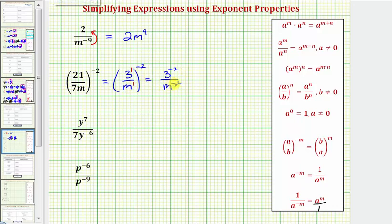And now to make the exponents positive, we'd move the three to the negative two down to the denominator, and the m to the negative two up to the numerator. So this would be equal to m to the power of positive two, or m squared, divided by three to the power of positive two, or three squared. And of course, three squared is equal to nine. So we have m squared divided by nine.